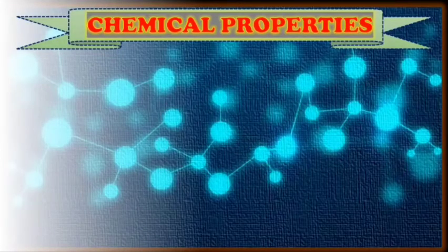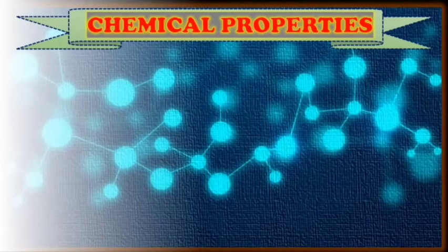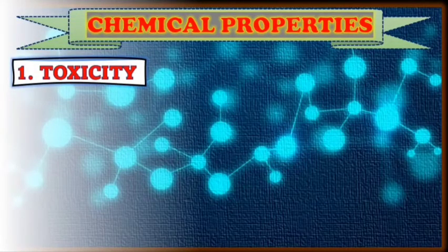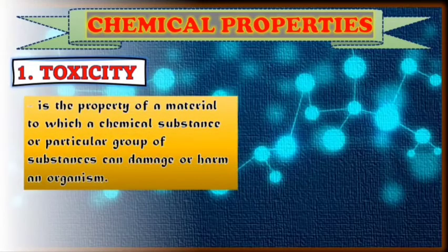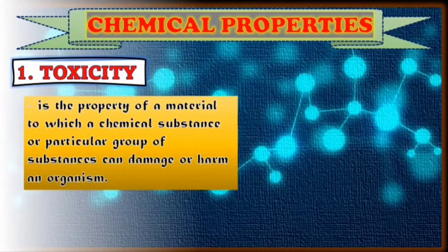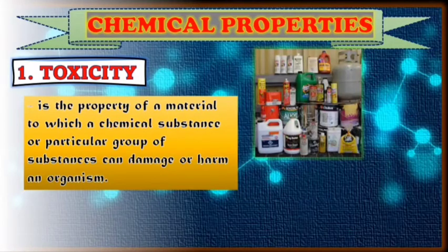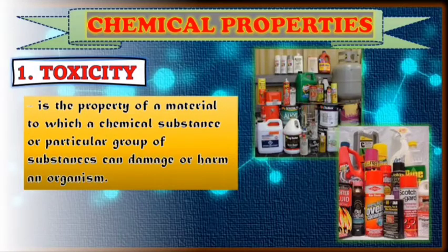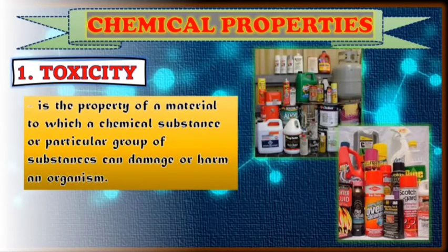Let's now proceed to the chemical properties of material. Number one chemical property is what you call toxicity. It is the property of a material by which a chemical substance or particular group of substances can damage or harm an organism. Like the cleaning materials we see in our bathroom and kitchen — zonrox, domex, and similar products — when ingested, that is what you call toxicity. That's dangerous.